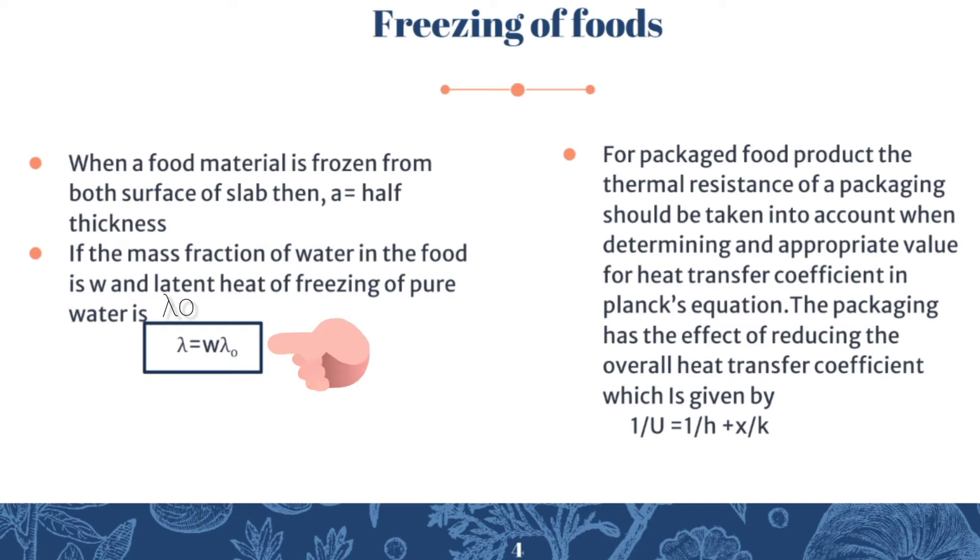For packaged food products, the thermal resistance of packaging should be taken into account when determining the appropriate value for heat transfer coefficient. Packaging has the effect of reducing the overall heat transfer coefficient, which is given by 1/U = 1/h + x/k, where x is the thickness and k is the thermal conductivity of packaging material. If packaging material is used for the food product, this formula calculates the overall heat transfer coefficient.